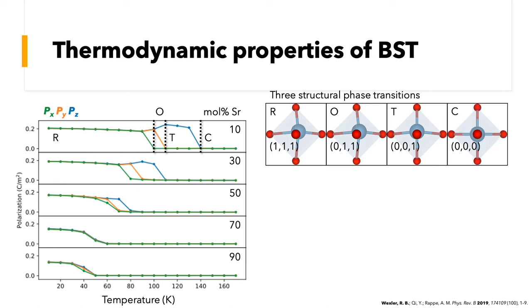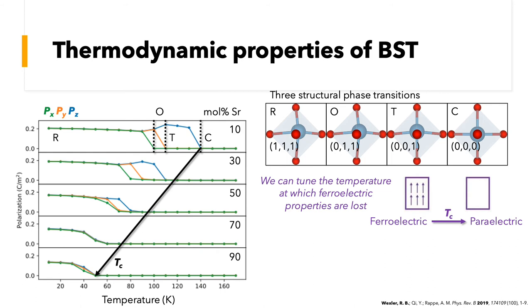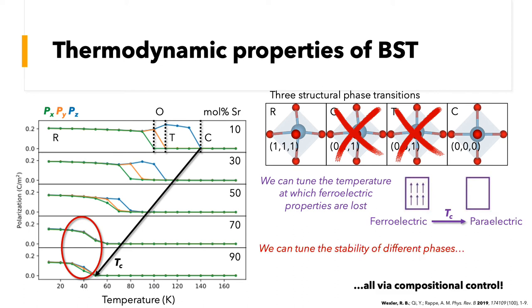Finally, at 140K, BST undergoes a phase transition from the ferroelectric tetragonal phase to the paraelectric cubic phase, denoted C. This is the Curie temperature, T sub C. As the strontium content is increased from 10 to 90 percent, the Curie temperature decreases quasi-linearly. And this makes sense because at higher strontium concentrations, the crystal behaves more like STO, which is paraelectric, and therefore doesn't have a ferroelectric-paraelectric phase transition or Curie temperature. In this way, strontium substitution enables the tuning of the temperature at which ferroelectric properties are lost. Additionally, at the high strontium content 70 and 90 percent, there are no longer regions of temperature where the orthorhombic and tetragonal phases are stable, which not only agrees with experiments, but also highlights that phase stability can also be tuned via compositional control.